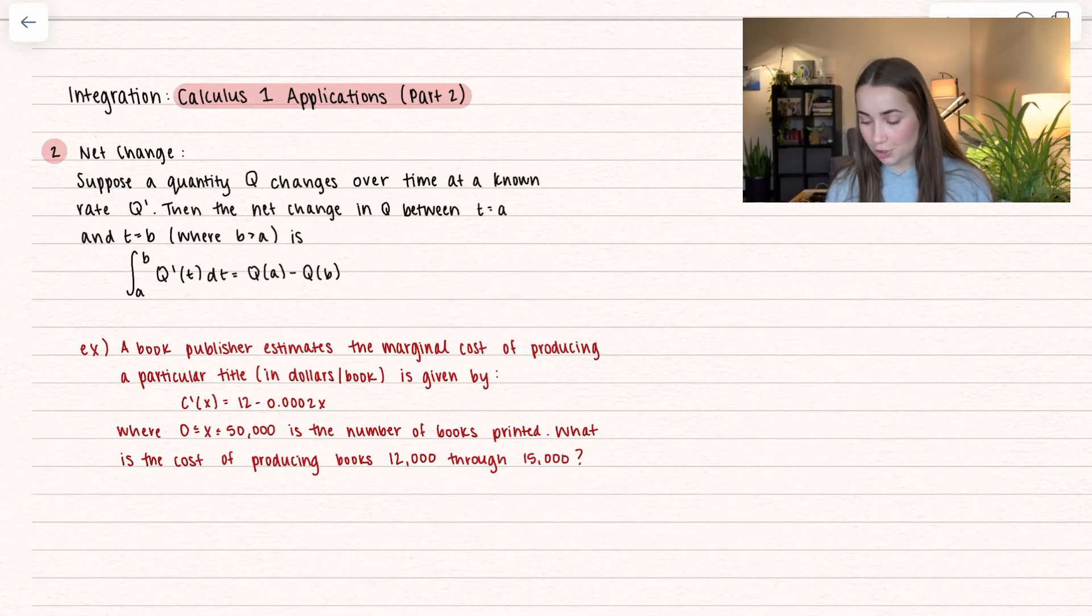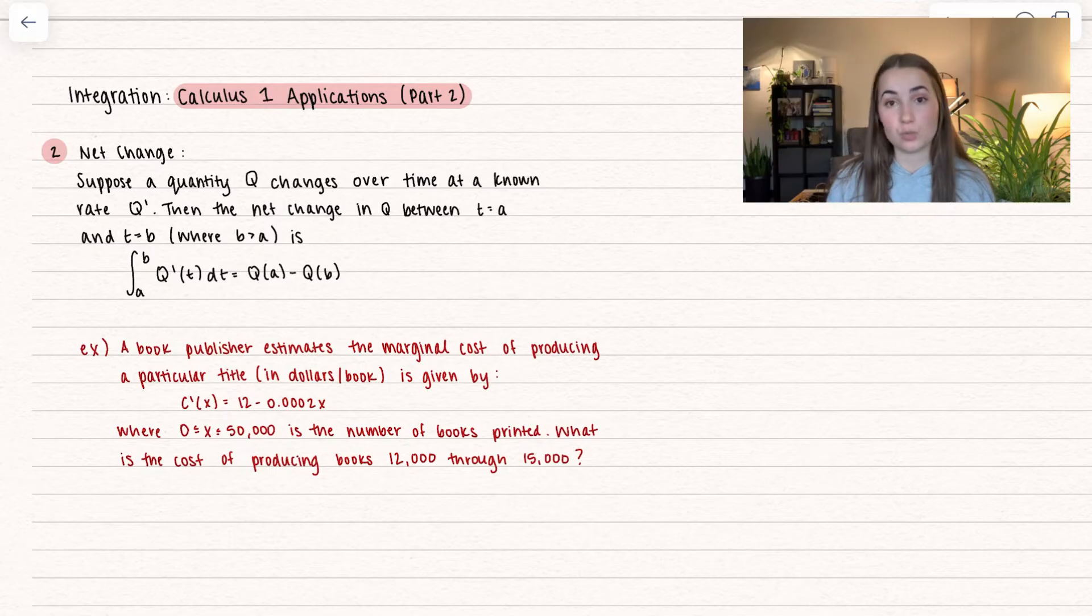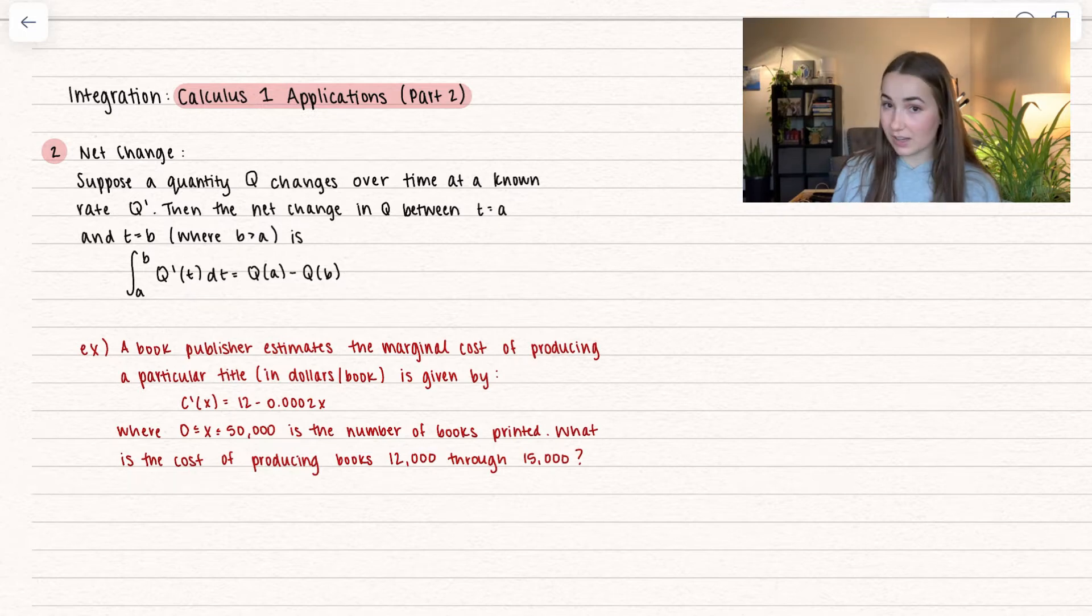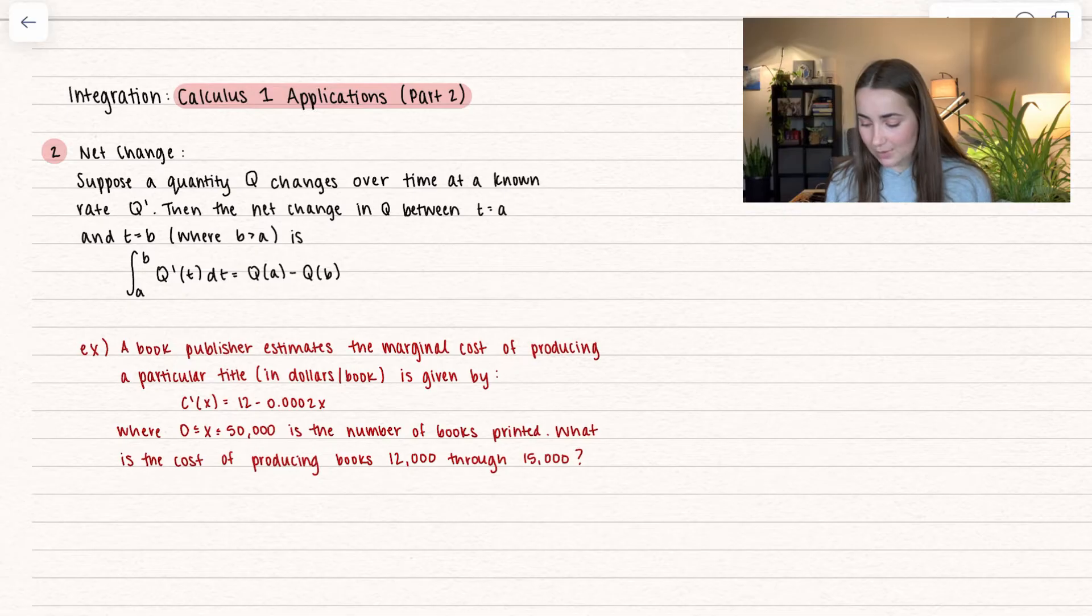Here we have: suppose a quantity q changes over time at a known rate q prime. Then the net change in q between t equals a and t equals b, so b has to be greater than a, is the integral between a and b, q prime of t is equal to q(b) minus q(a).